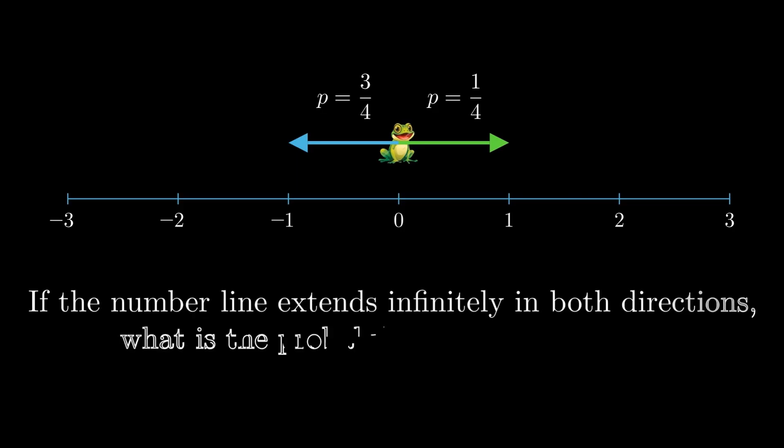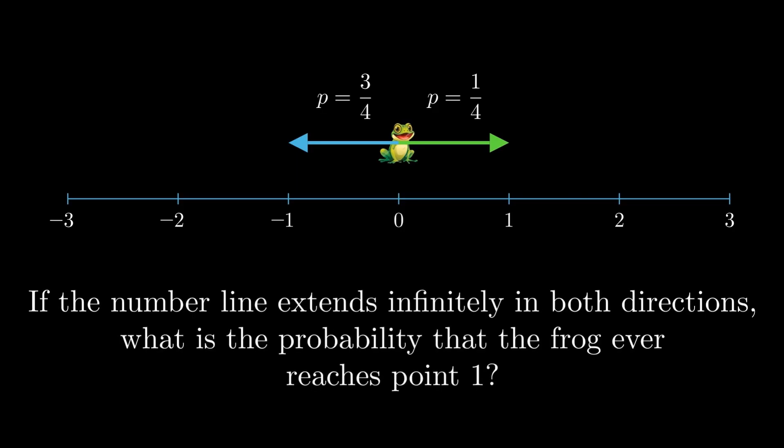Let's consider another problem. Now our frog is at 0 on a number line that extends infinitely in both directions. On each move, the frog jumps one unit to the right with probability 1/4 and one unit to the left with probability 3/4. If the number line extends infinitely in both directions, what is the probability that the frog ever reaches 1? Try to solve this on your own.